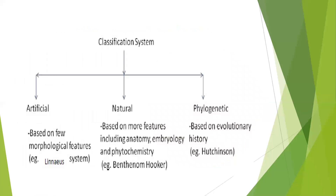Now let us talk about the different classification systems. The different classification systems can be artificial, natural, or phylogenetic. Artificial classification was given by Linnaeus, natural was given by Bentham and Hooker, and phylogenetic by Hutchinson.